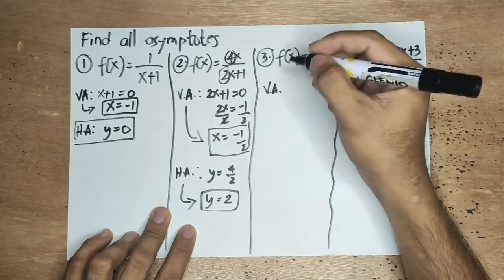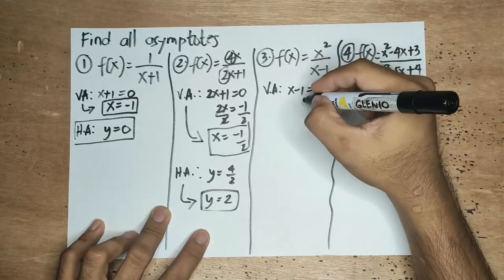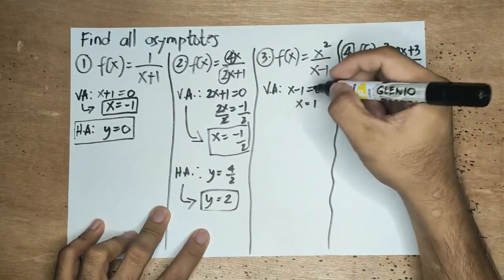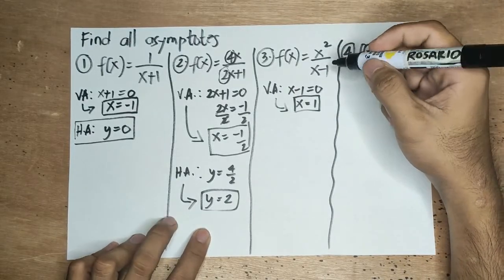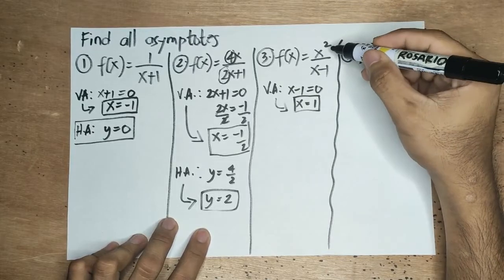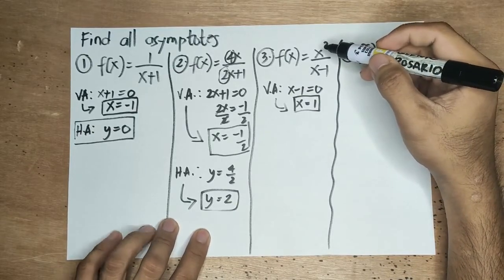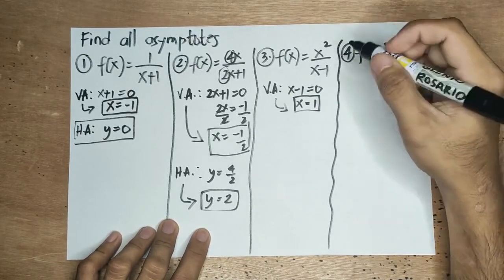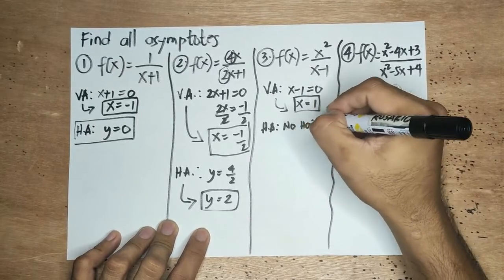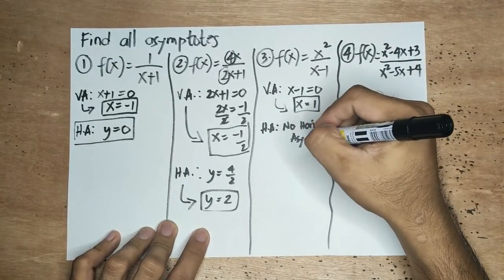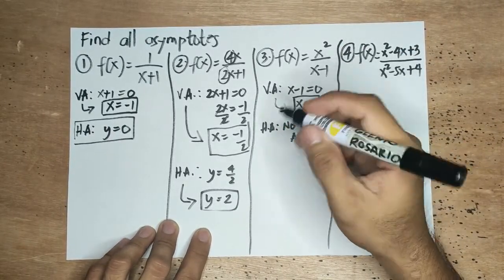For the vertical asymptote of the third item, we consider the denominator, ibababa natin yan, equal to zero, then solve for x. Transposing negative 1, it becomes positive 1 — this is the vertical asymptote. Is there a horizontal asymptote in the third example? Wala. Kasi ito yung third condition: kapag mas malaki yung degree ni numerator kesa kay denominator, wala siyang horizontal asymptote. Since wala siyang horizontal asymptote, mayroon naman siyang oblique asymptote.